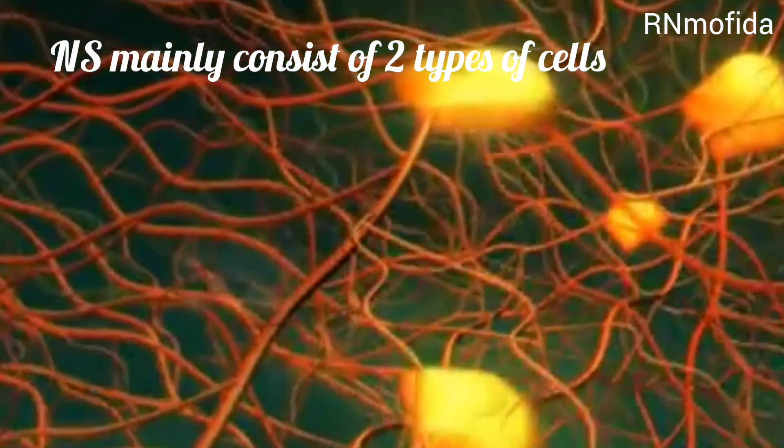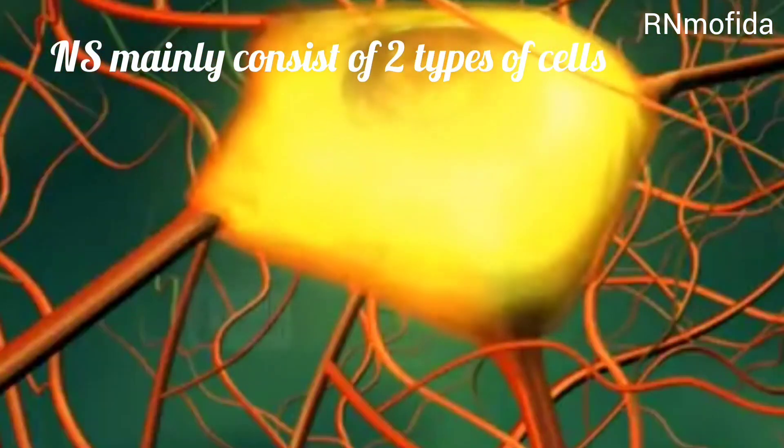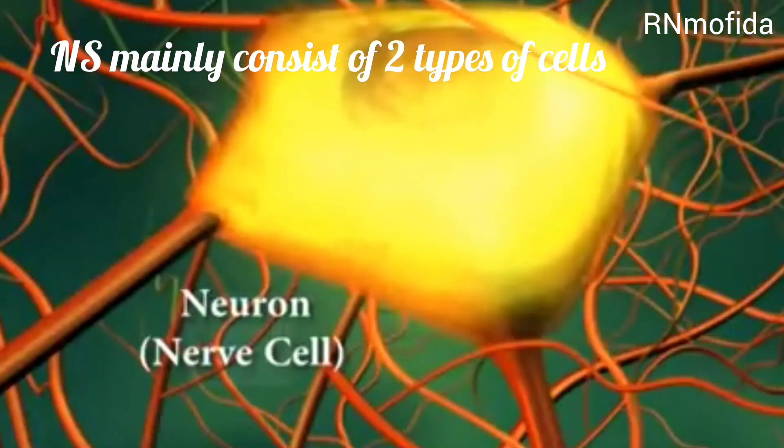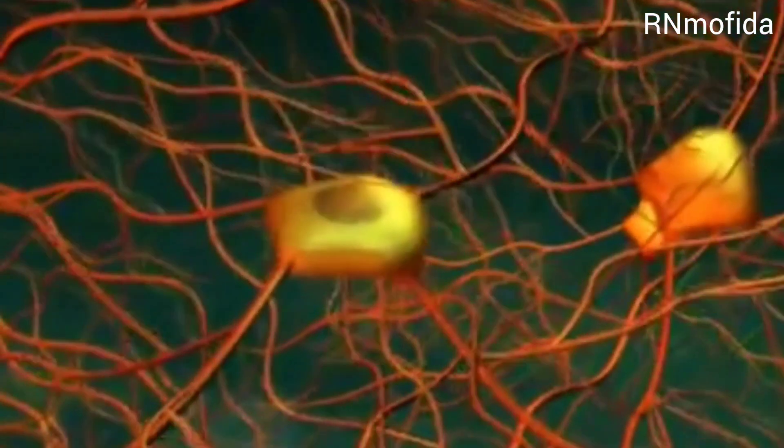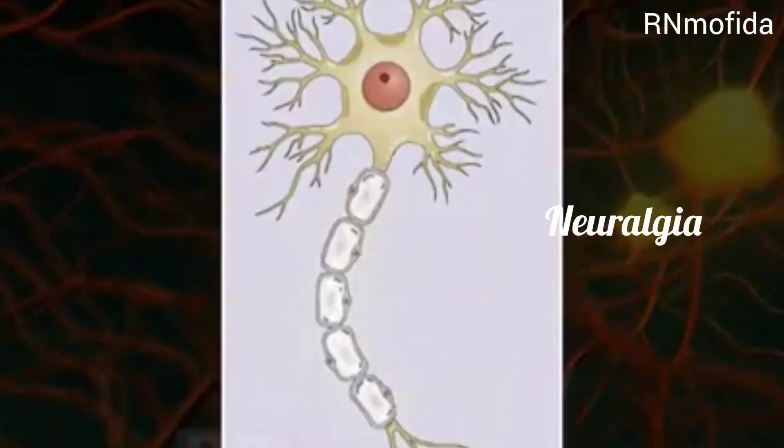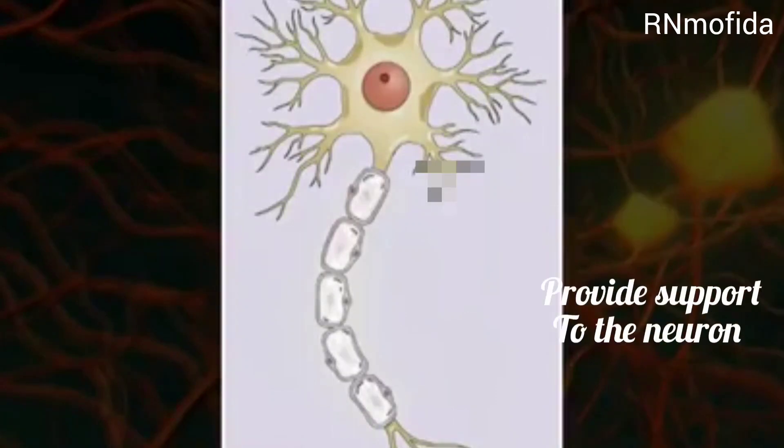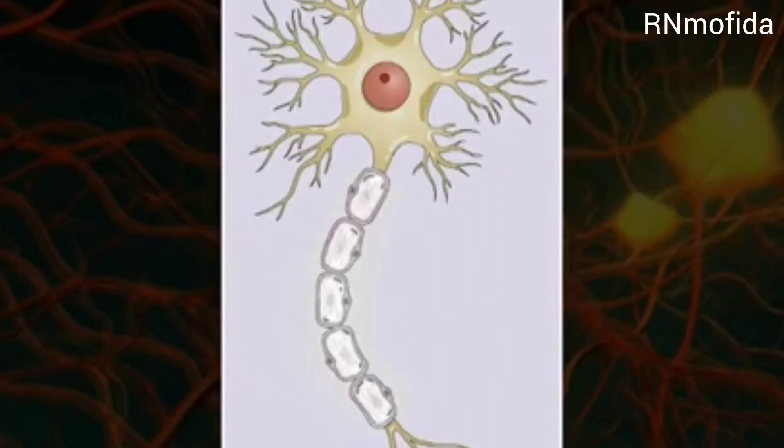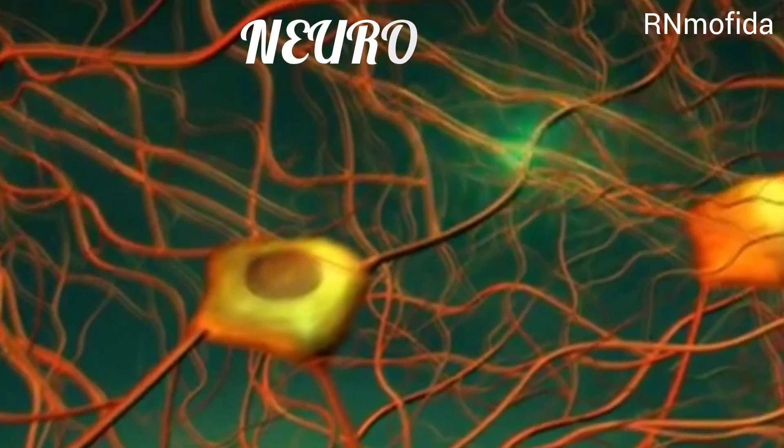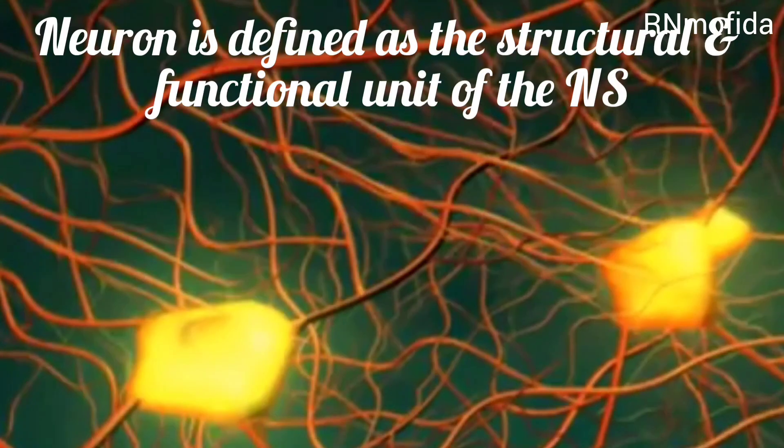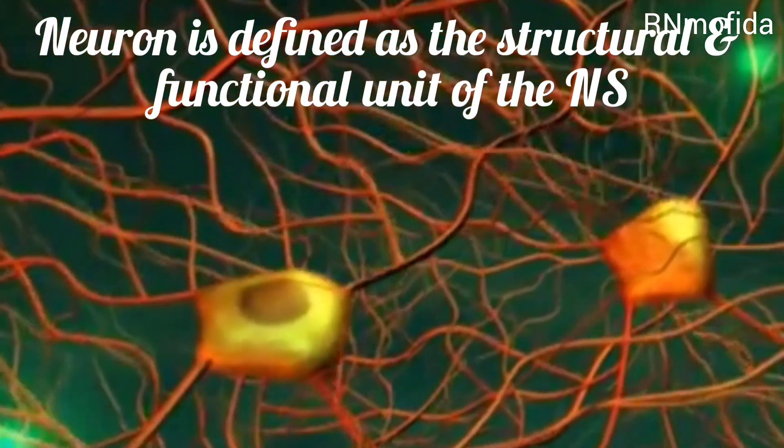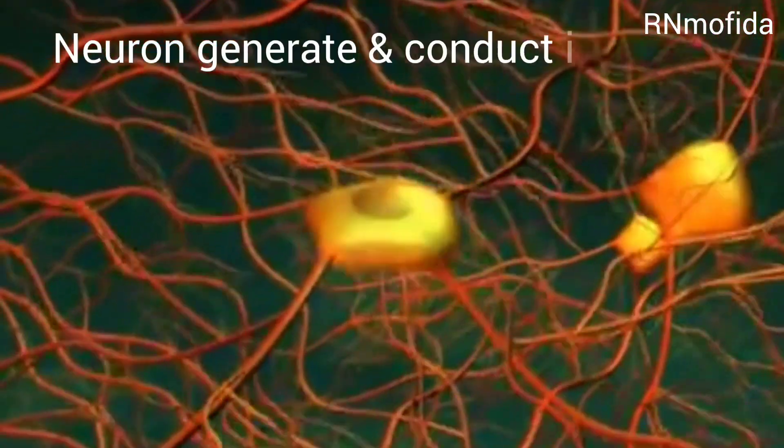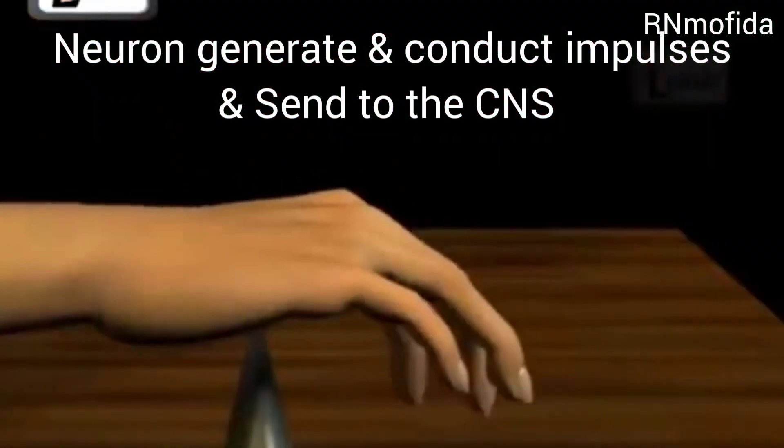The nervous system is mainly composed of two types of cells. The main specialized cell is called a neuron. Another type of cell is neuroglia, that provides support to the neurons and helps provide food for the neurons.